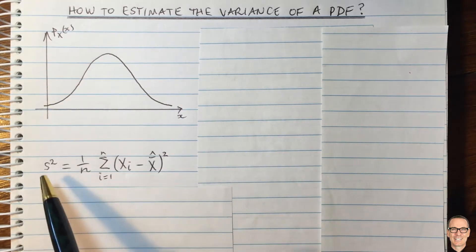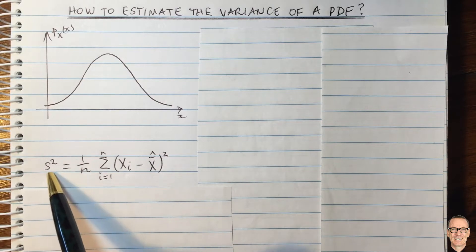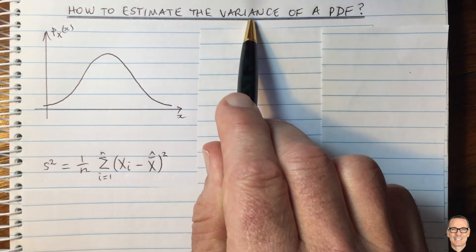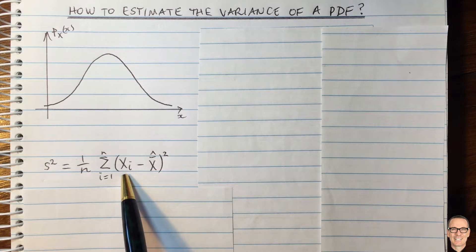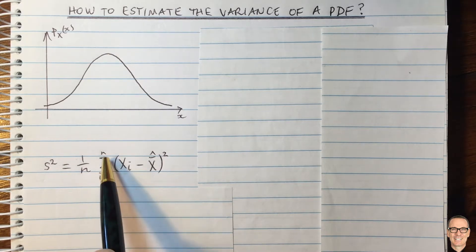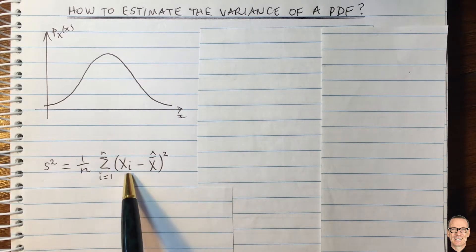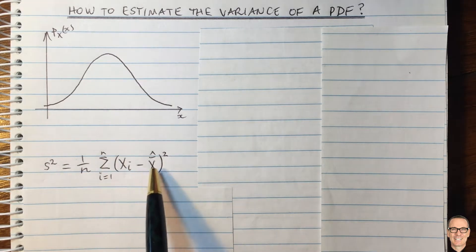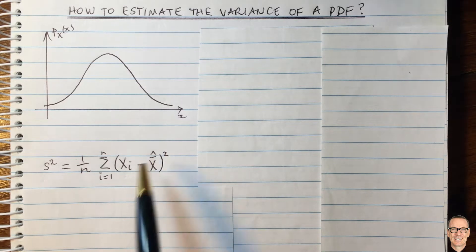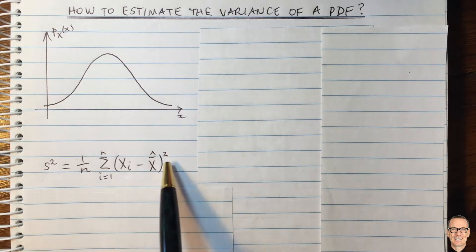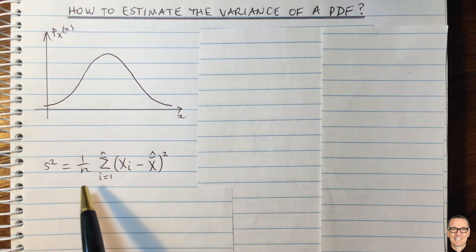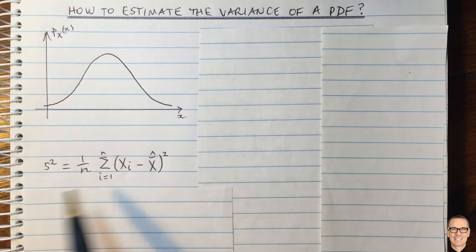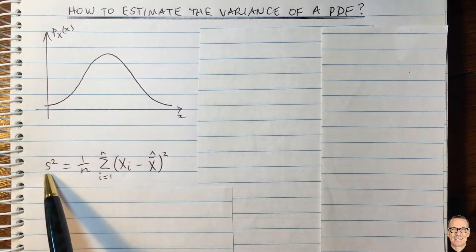I've got an equation here for an estimate of the variance. You need to take samples from your random variable. You take n samples, and for each sample you subtract the estimate for the mean, then take the square and sum them up. This gives you a way to estimate the variance of that random variable.